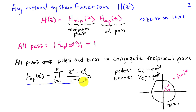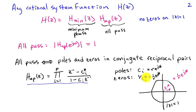My pole is at c_i and my zero ends up being at 1 over c_i complex conjugate. If I have a pole at c_i written in polar notation with magnitude r and phase angle phi, then the zero in the conjugate reciprocal pair inverts the magnitude of the pole while the angle stays the same — conjugate changes j to minus j, but that's in the denominator so the phase ends up back at phi. So if I have a pole at r·e^(jφ), the conjugate reciprocal zero is at (1/r)·e^(jφ). Since each of these terms has unit gain at all frequencies, I can multiply as many together as I want to get a general p-th order all-pass system.